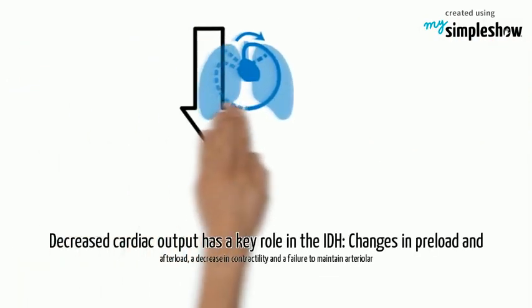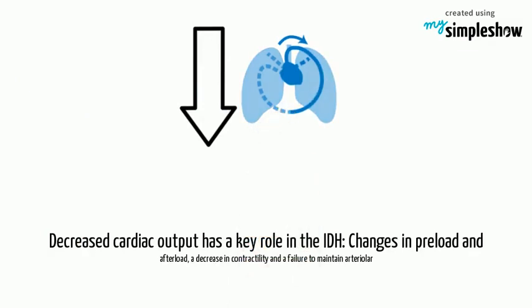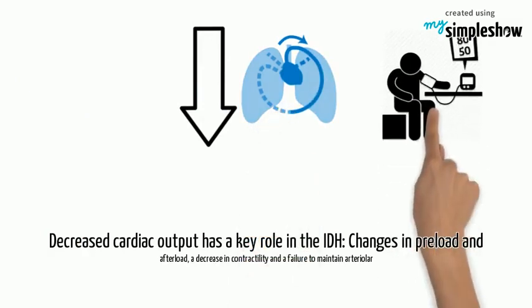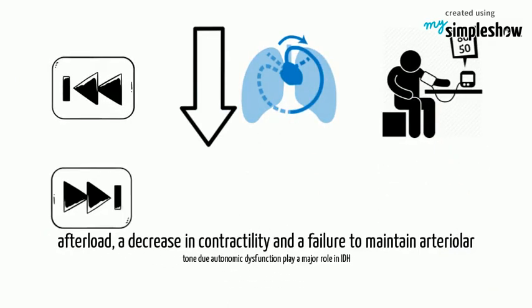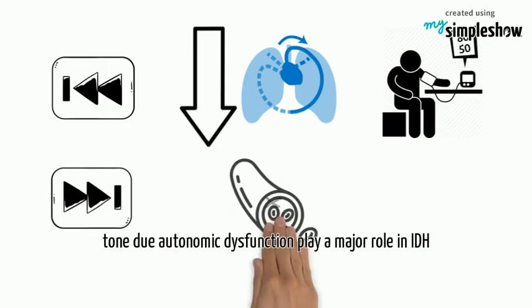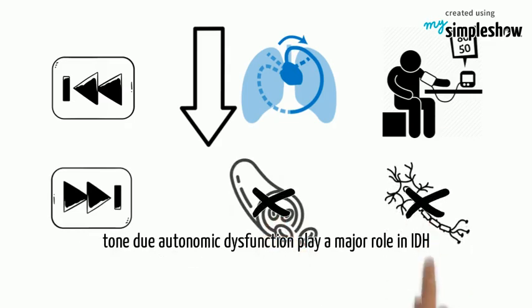Decreased cardiac output has a key role in IDH. Changes in preload and afterload, a decrease in contractility, and a failure to maintain arterial tone due to autonomic dysfunction play a major role in IDH.